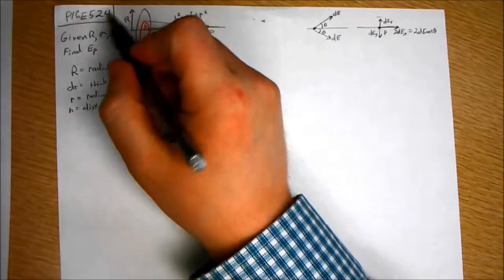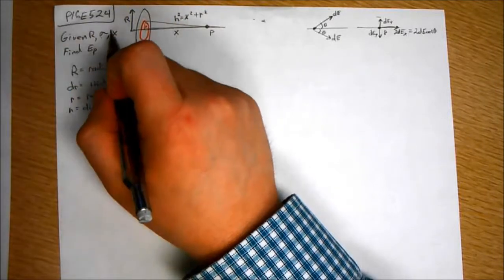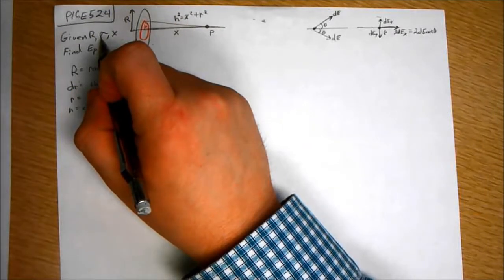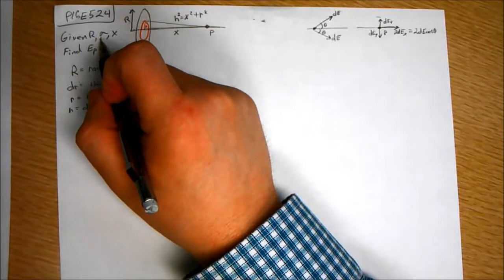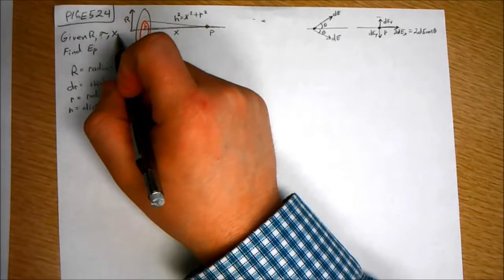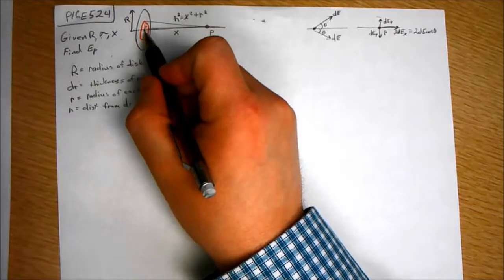So you are given the radius of the disc, you're given the surface charge density, which is in coulombs per meter squared - it's a surface charge density, not linear charge density. X is the distance from the center of the ring to P.